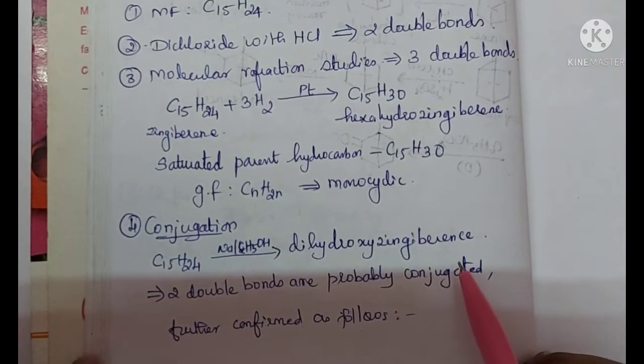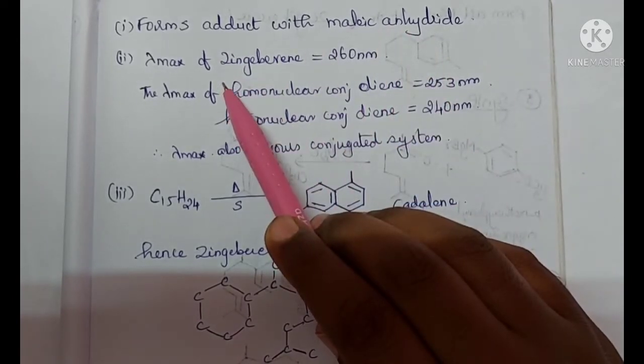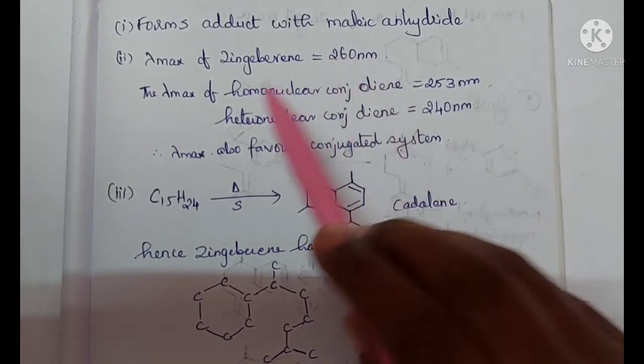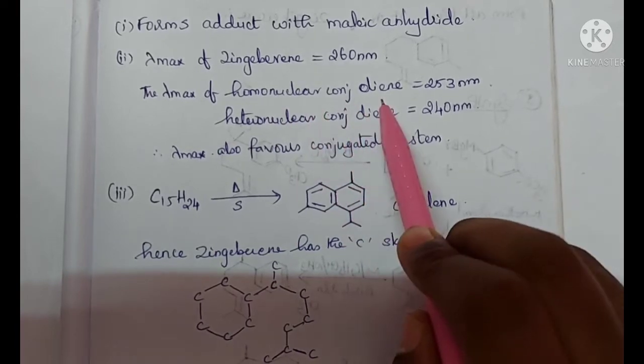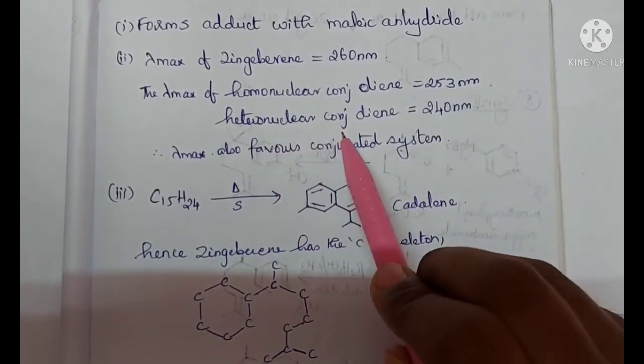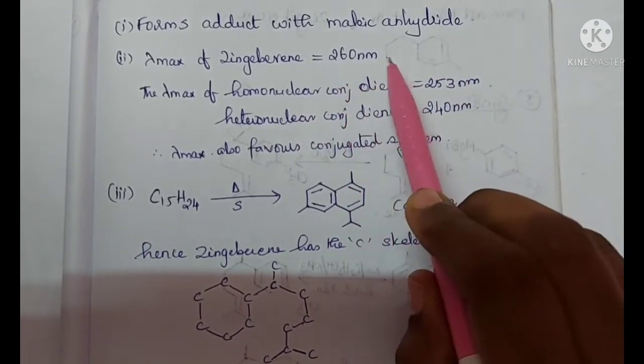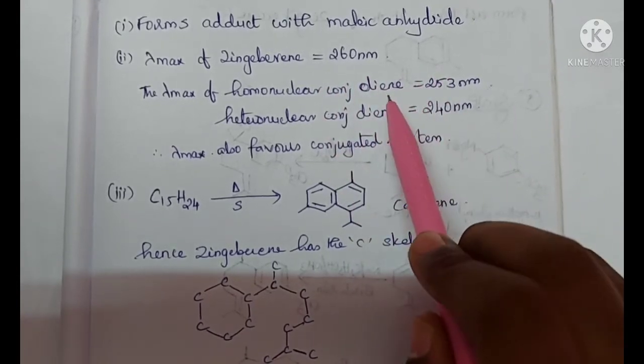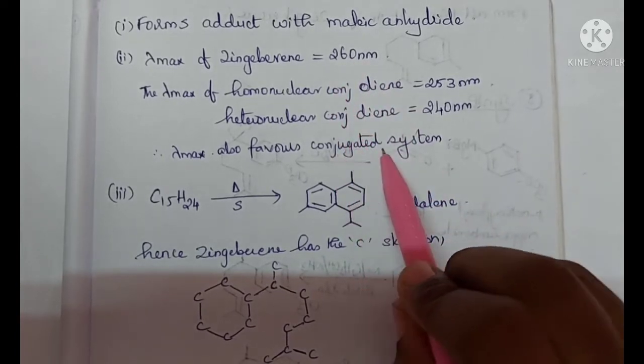Zingiberine forms adduct with maleic anhydride. Also, the lambda maximum value of Zingiberine is 260 nanometers. As we know that the lambda max value of homonuclear conjugated diene is 253 nanometers and heteronuclear conjugated diene is 240 nanometers. The value 260 nanometers is nearly close to these two values. So finally we can conclude that Zingiberine also has a conjugated system.